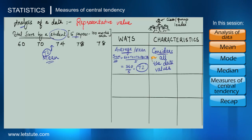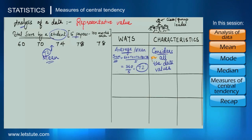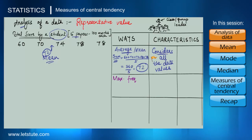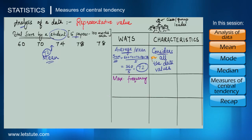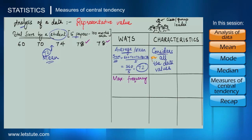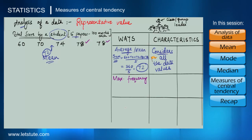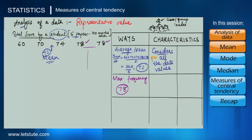At times we might not be interested in reporting average as our representative value. We might just be looking for the value which has the maximum frequency — which occurs the maximum number of times — like which is the most popular team, or the maximum wickets taken by a bowler in many matches. Here, the student has secured 78 marks in two papers, more than any other mark.